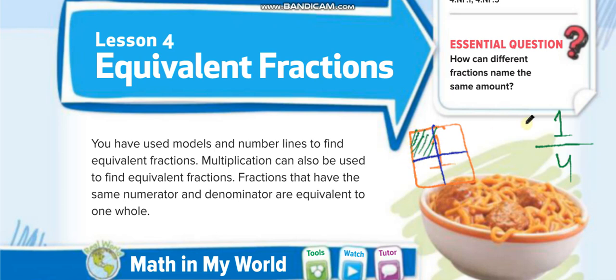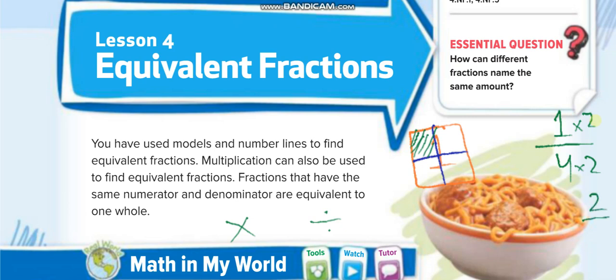To make an equivalent fraction, for example if I want to make an equivalent fraction for one over four, I can either multiply or divide by any number, but I must multiply the same number on top and the same number on the bottom. For example, if I multiply by two up and two down: one times two is two, four times two is eight. So two over eight is an equivalent fraction for one over four.